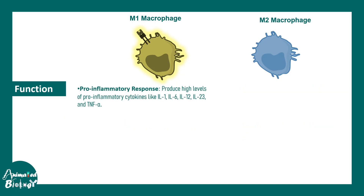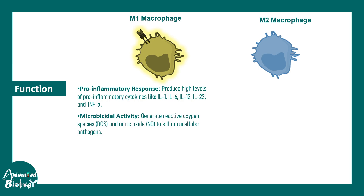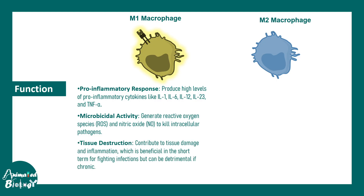When it comes to function, M1 macrophages have pro-inflammatory function. M1 macrophages underlie chronic inflammation and secrete several inflammatory mediators like IL-1, IL-6, IL-12, and IL-23. They have microbicidal activity and can kill microbes using reactive oxygen and reactive nitric oxide species. They can also lead to tissue destruction, which is beneficial in the short term but could be harmful in the long term.